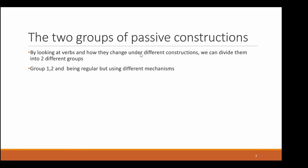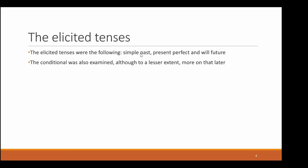First of all, the two groups of passive constructions. By looking at verbs and how they change under different constructions, we can divide them into two different groups — group one and two — both being regular but using different mechanisms. The elicited tenses were: simple past, present perfect, and real future. I also looked at the conditional, although to a lesser extent — more on that later.